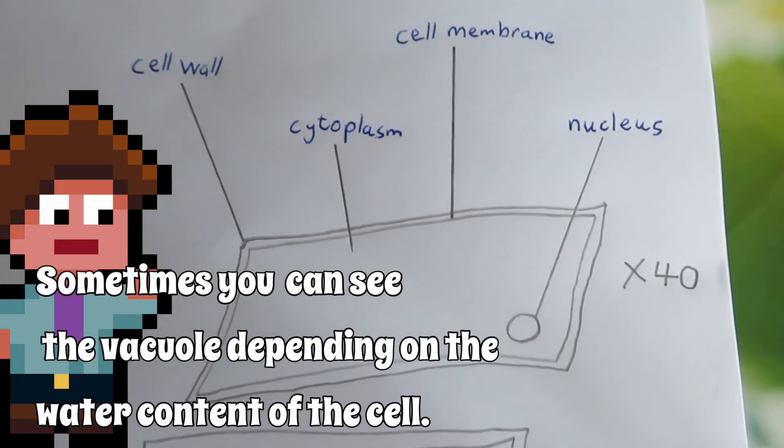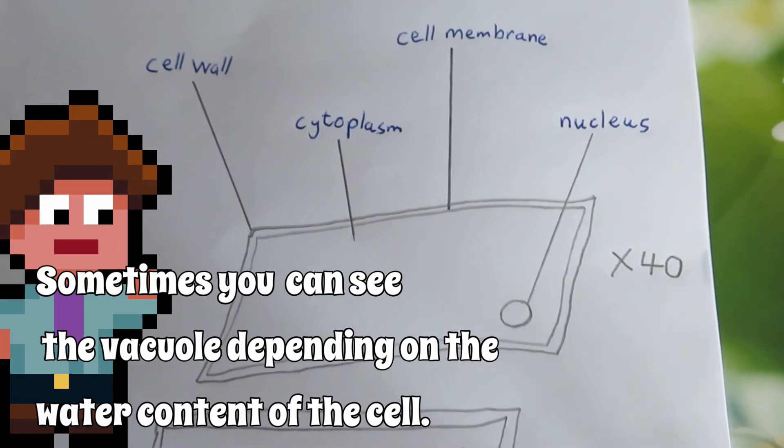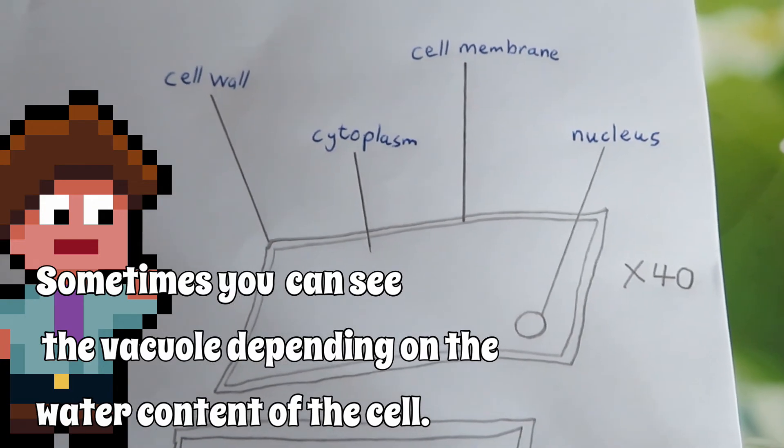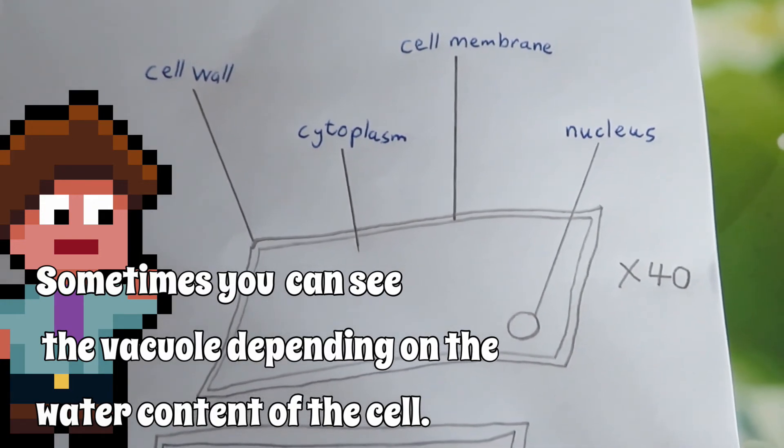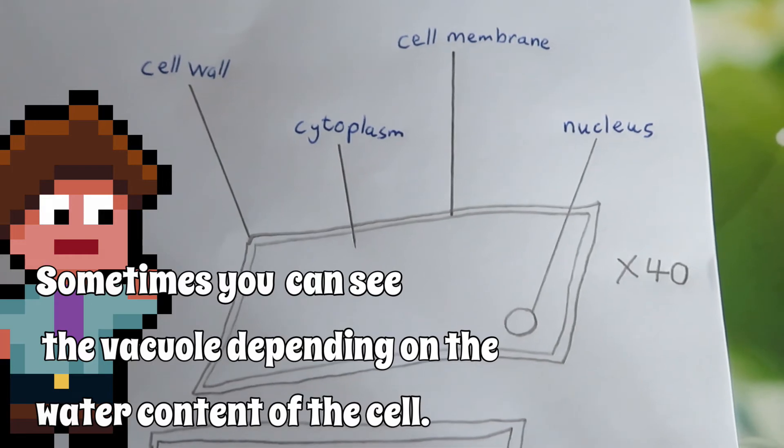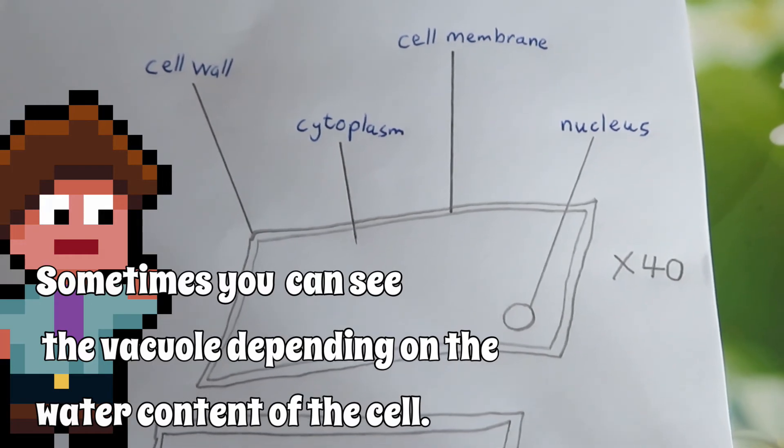For the onion cell, the only extra thing you label is the cell wall, because again features like the mitochondria cannot be seen at this magnification.